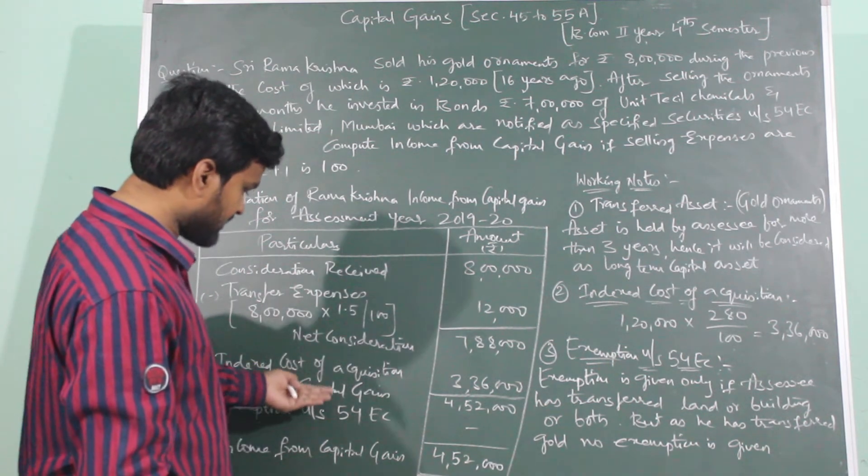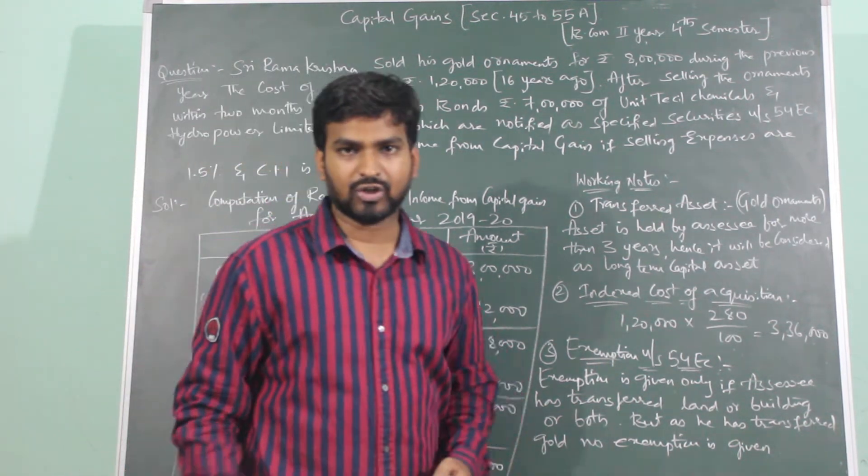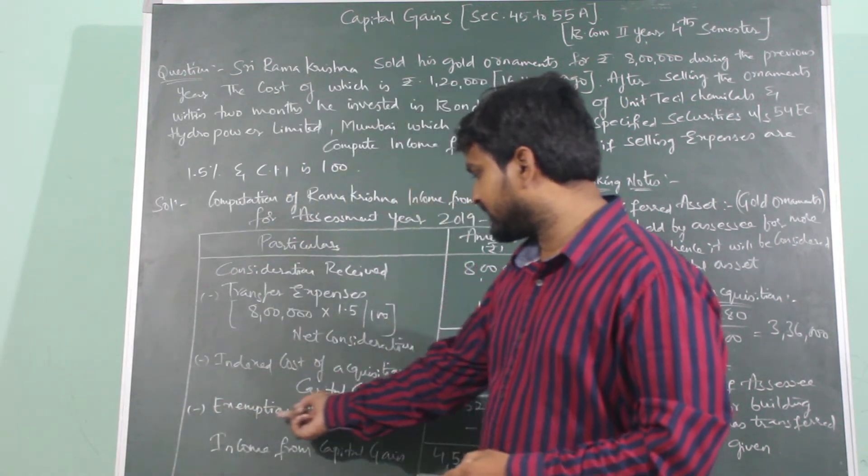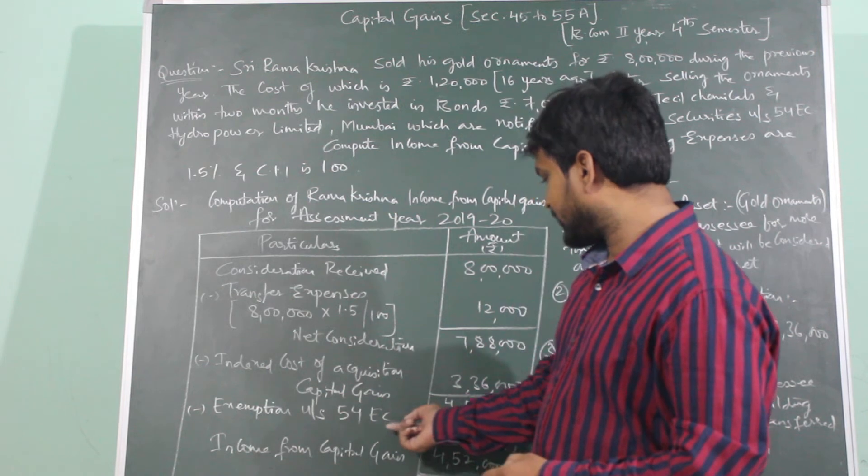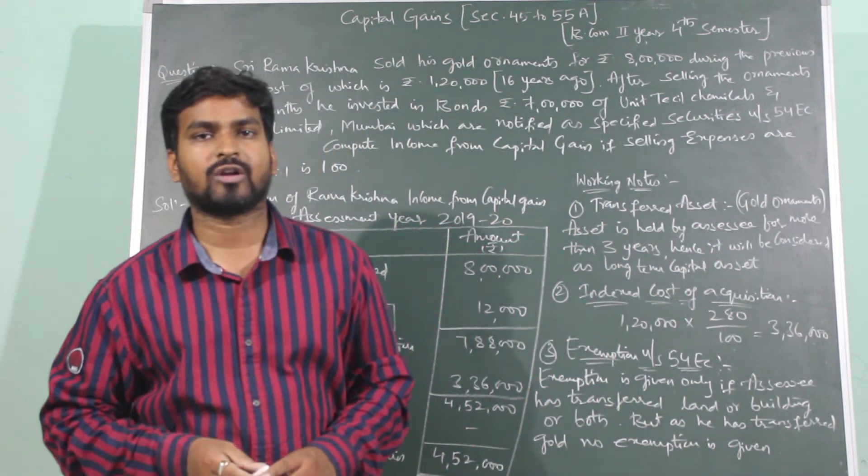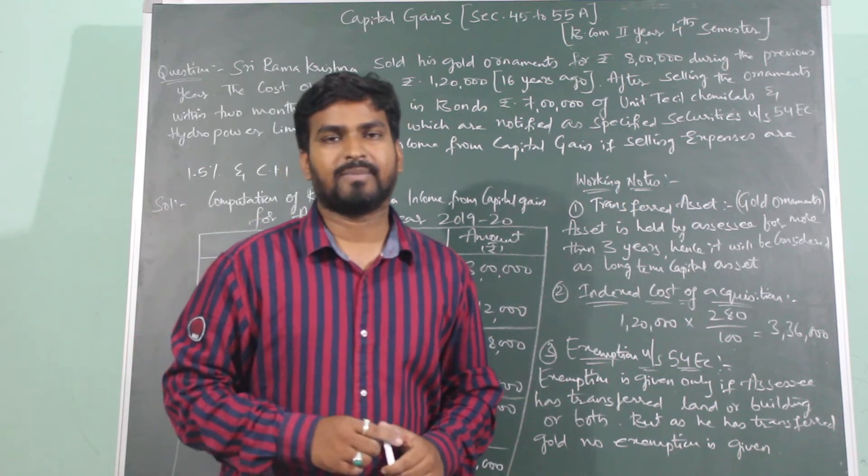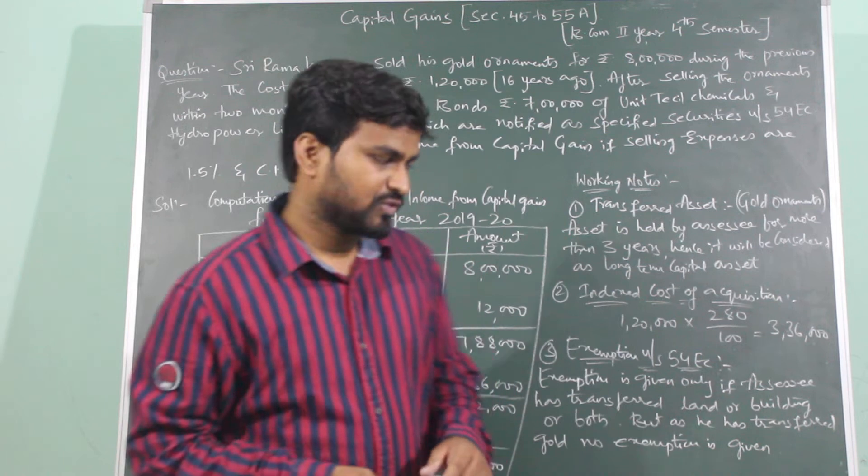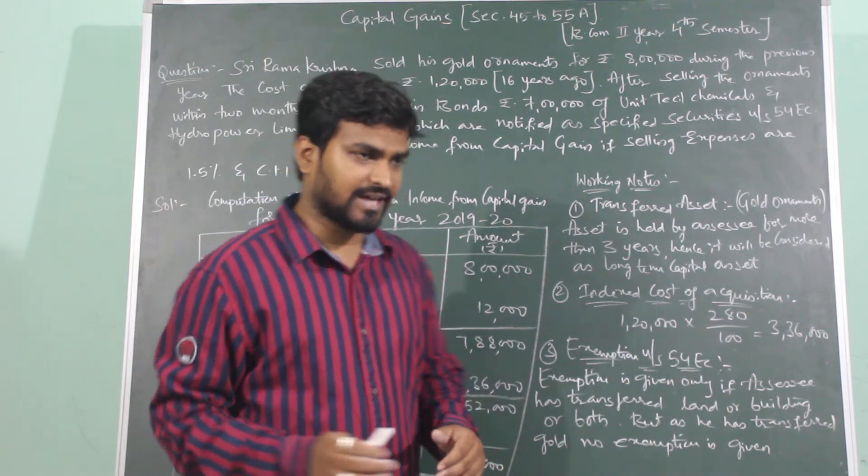Ab tak yahaan par hum isko income from capital gain likhte rahe the, but yahaan par as exemption is to be allowed or is not to be allowed, to yahaan par capital gain likhein, next se kya likhenge? Minus exemption under section 54 EC. Ab yahaan par exemption mein, the assessee has sold his gold ornaments aur jo paisa aaya, yeh paisa leke kya kare? Kuch specified securities mein invest kare to inko exemption milta ya nahi milta?